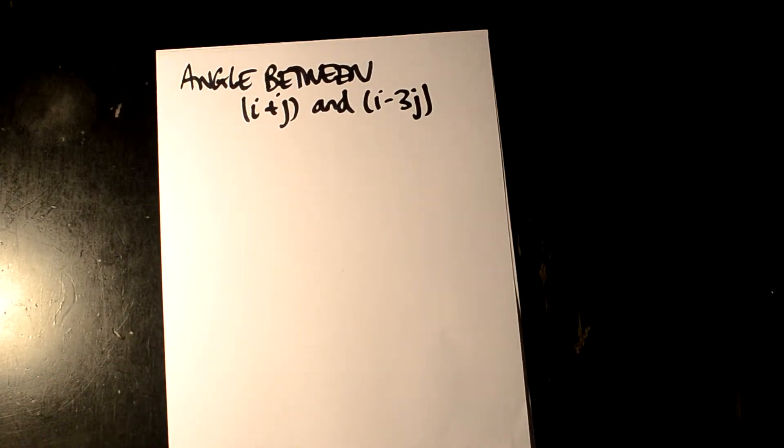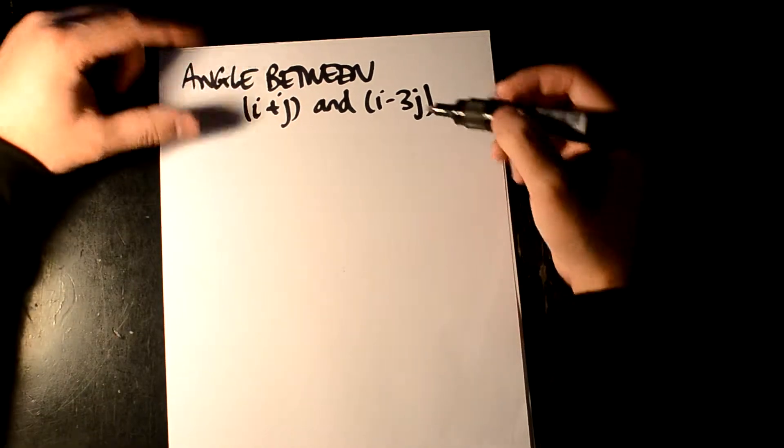In this problem, we're going to be finding the angle between two vectors. In my previous video, I went over the dot product of two vectors, and we're going to be using that and combining it together to look at this.